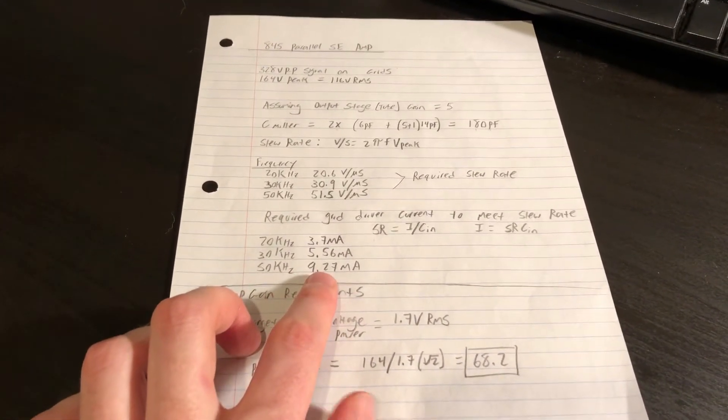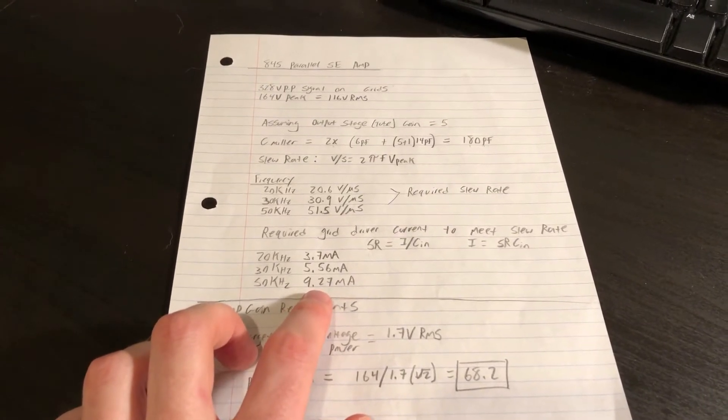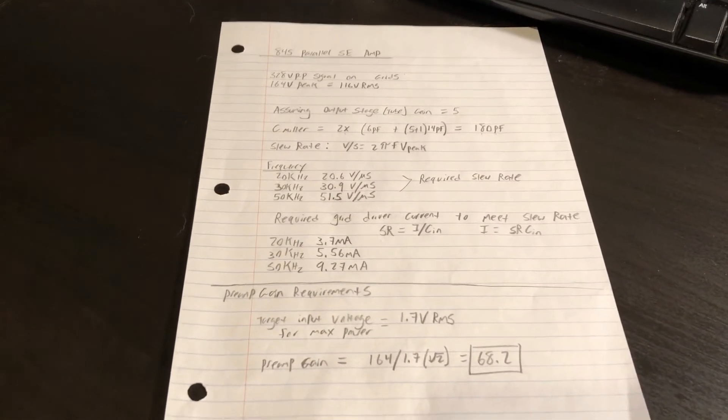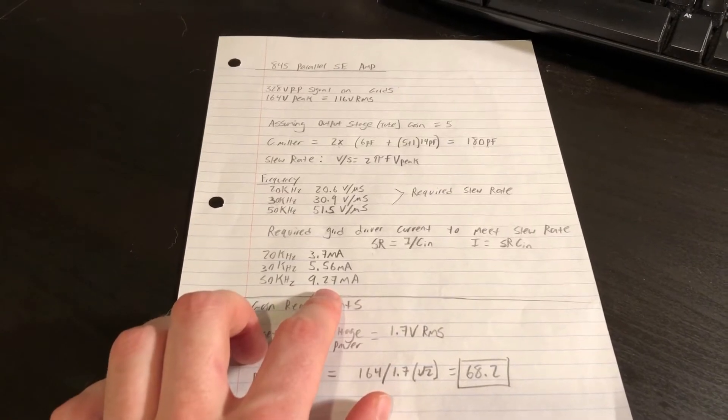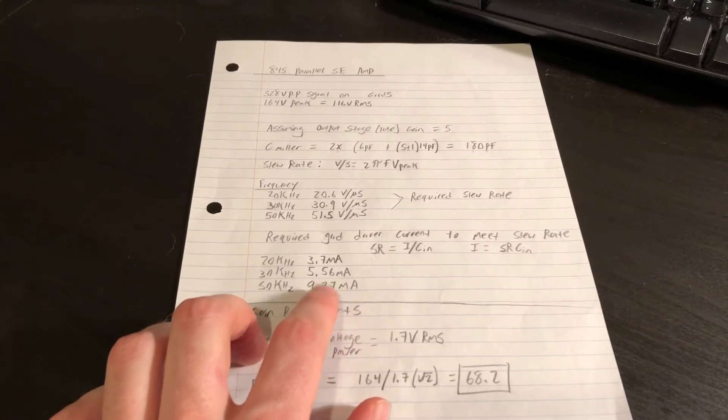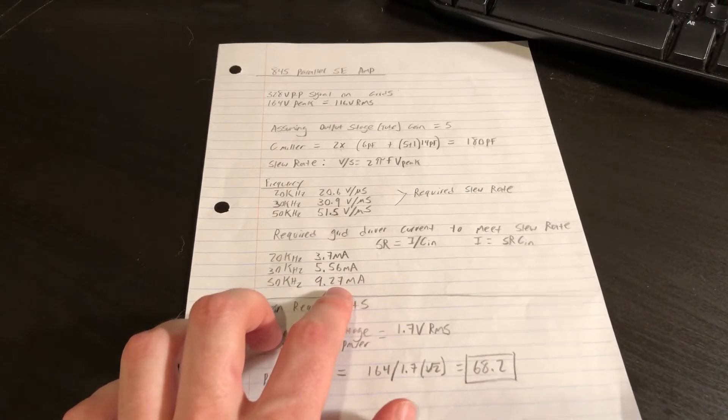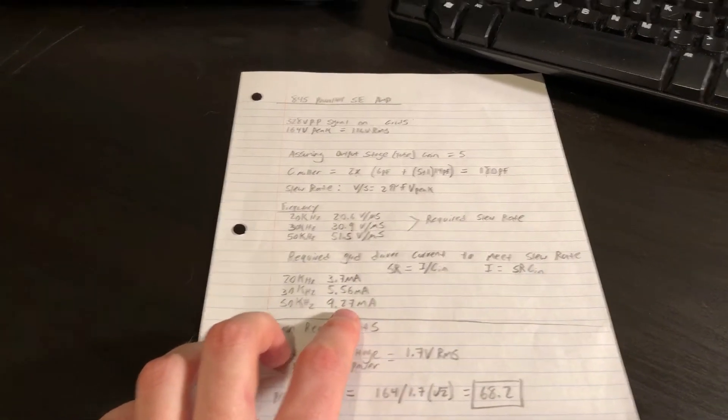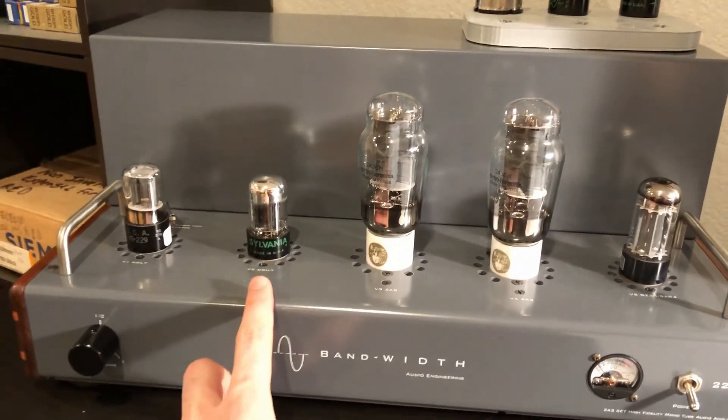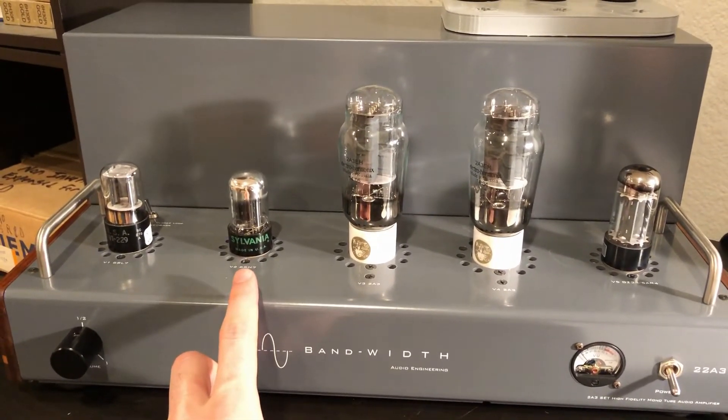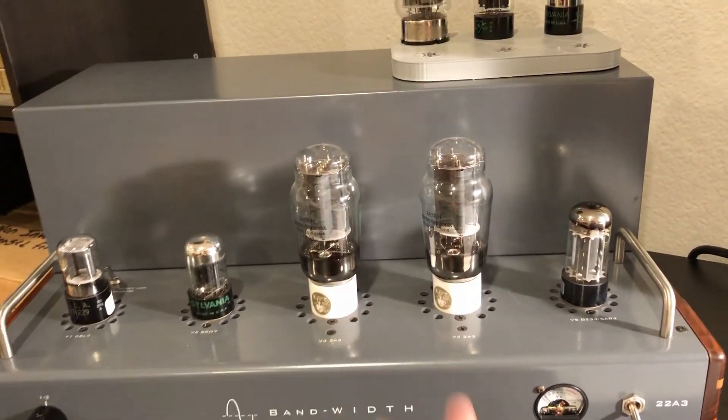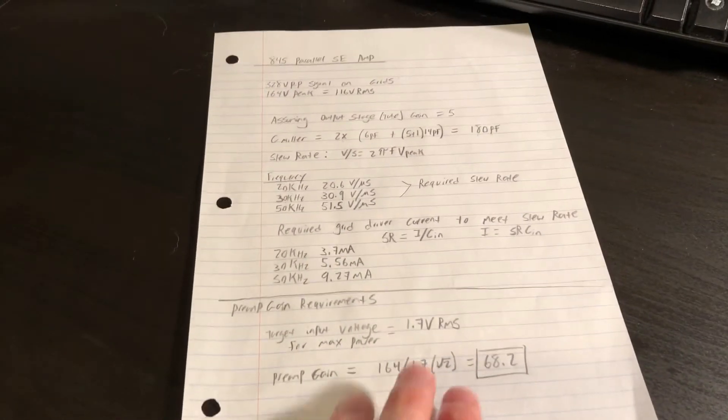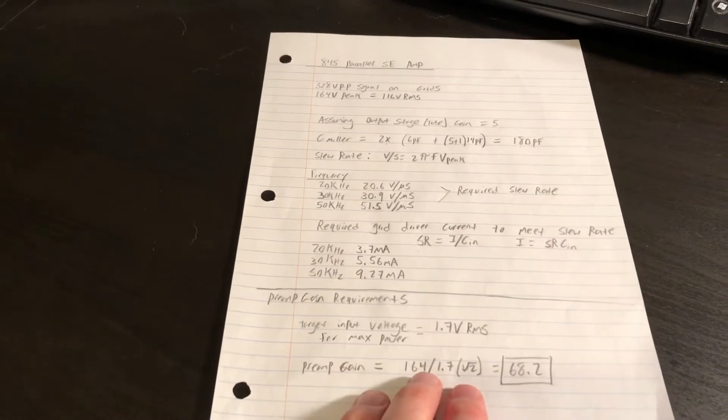And at 50 kilohertz, we need a driver capable of sourcing 9.3, 9.27, 9.3 milliamps of current. Again, this is assuming ideal conditions kind of on pen and paper, but if we're going to be honest with ourselves, we're going to need a couple factors greater than this of actual current. So that means our driver tube will have to be able to supply 10, 20, 30 milliamps of current swing into the output grids of the parallel 845 amplifier. And that's one of many of the challenges that we'll face when developing this amplifier is developing a robust enough driver.